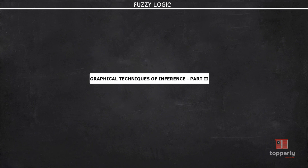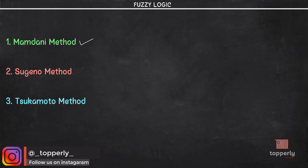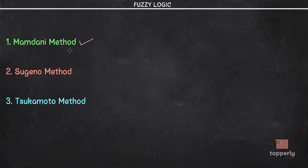Hey everyone, welcome back to Fuzzy Logic Lectures. In the previous video we looked into the different types of graphical techniques for inferences and we learned the first type, which is the Mamdani method. In this lecture we'll be looking into the second type of graphical inference technique, called the Sugeno method or Sugeno systems. So let's get started.